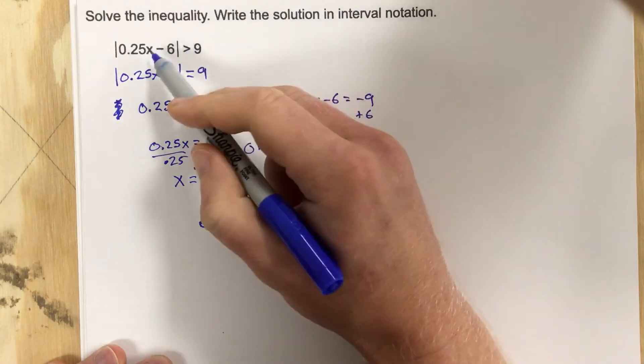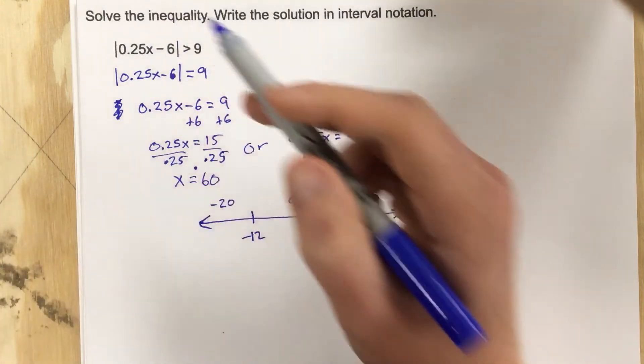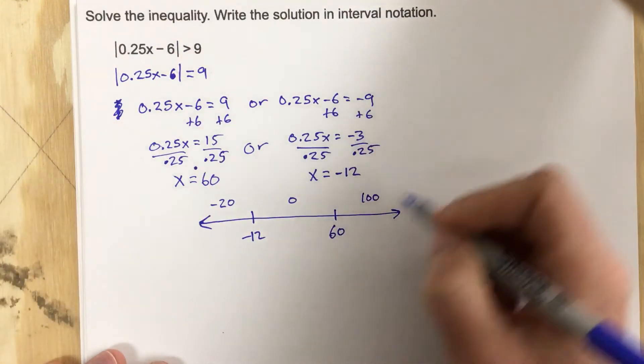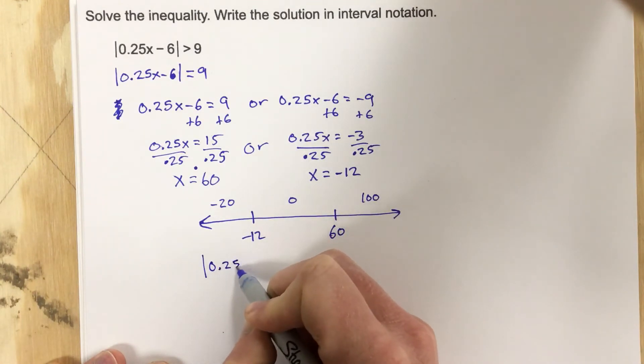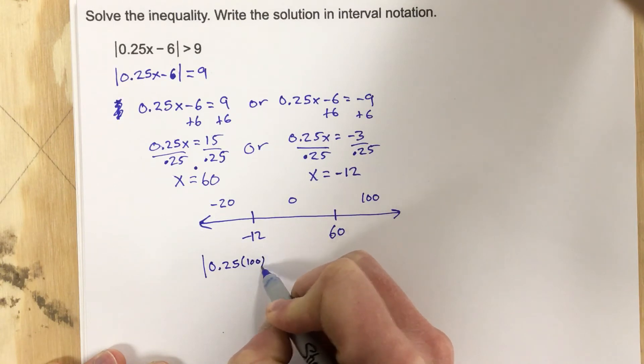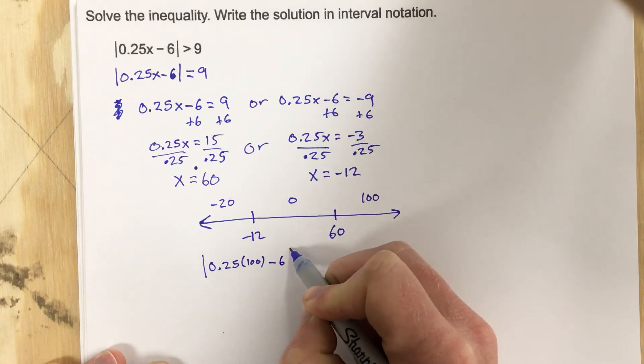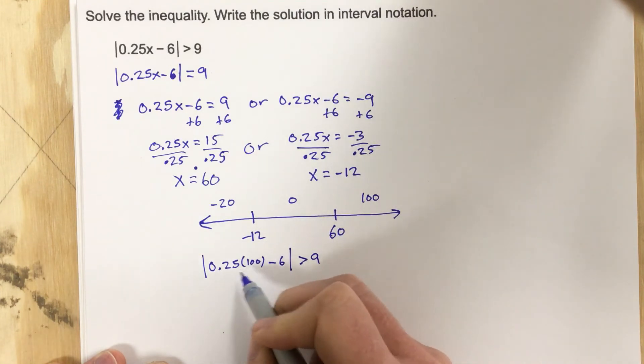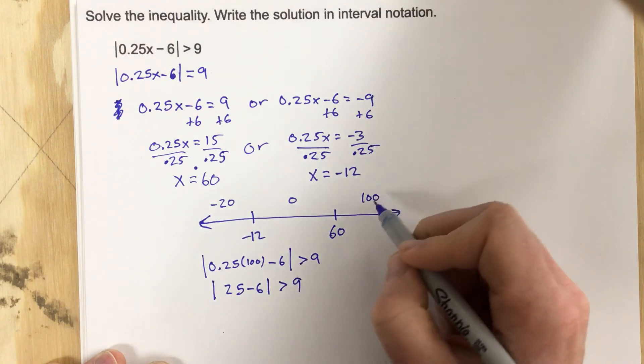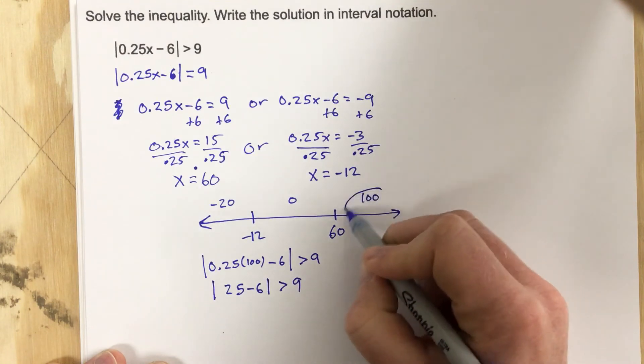So I'm going to plug in 100 first. When I plug in 100, I get 100 times 0.25, so we're essentially doing the absolute value 0.25 times 100 minus 6 greater than 9. Is this true? Well, this will end up with absolute value of 0.25 of 100, that's 25 minus 6 greater than 9. You can see right there, absolute value of 25 minus 6, that's 19, that's greater than 9. So these work. So I'm going to circle this area, this works.